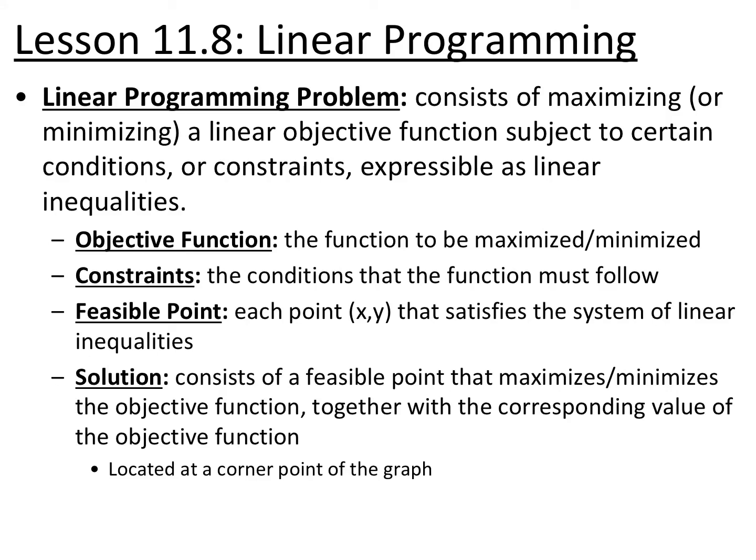Lesson 11.8 is linear programming. Linear programming consists of maximizing or minimizing a linear objective function subject to certain conditions or constraints. You'll have an objective function — what you're trying to maximize, such as cost or people — and then certain constraints or conditions that must be followed. Feasible points are each point XY that satisfy the system of linear inequalities. The solution is the feasible point that maximizes or minimizes the objective function, and feasible points are all located at corner points on the graph.